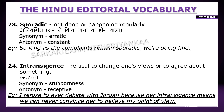The next one is 'intransigence'. Intransigence ka matlab hota hai koi person agar apna view, decision, ya opinion nahi change karta, ya kisi ke saath agree nahi karta — usse hi intransigence kaha jata hai, yani kattarta. Synonym: stubbornness. Antonym: receptive. Example: 'I refuse to ever debate with Jordan because her intransigence means we can never convince her to believe my point of view.'